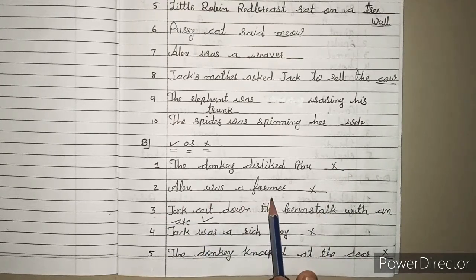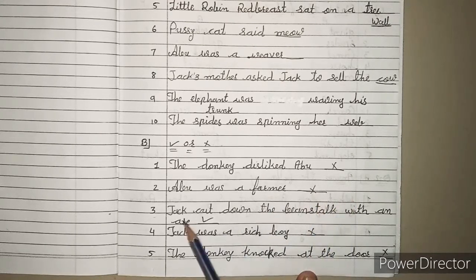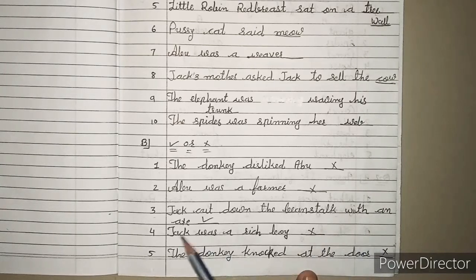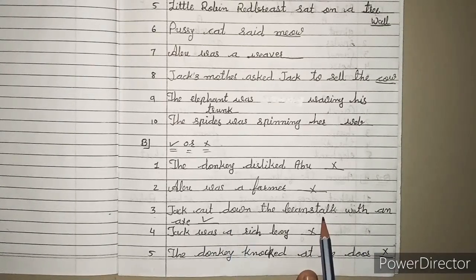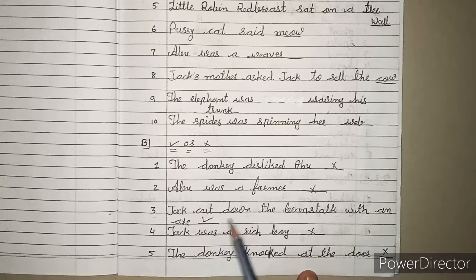2. Abu was a farmer. Abu farmer था? नहीं, तो क्या आएगा यहाँ पर? Wrong. 3. Jack cut down the beanstalk with an axe. Jack ने beanstalk axe की help से cut किया था? तो क्या आएगा यहाँ पर? Right.